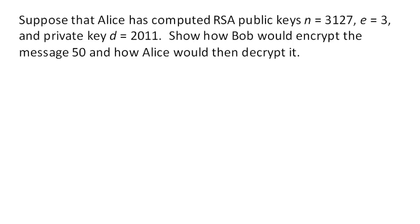Suppose that Alice has computed RSA public keys of n equals 3127, e equals 3, and then she has her private key d equals 2011.